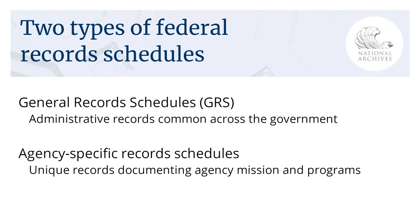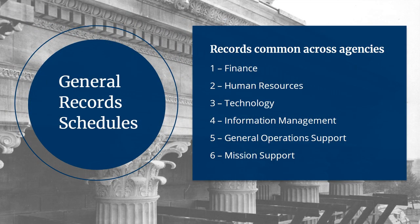In the U.S. Federal Government, we use two main types of record schedules. The General Record Schedule, or GRS, covers common administrative and housekeeping records. All agencies use the GRS in addition to their own unique agency-specific record schedules. General Record Schedules cover administrative records common across the government, while agency-specific record schedules cover unique records documenting agency mission and programs.